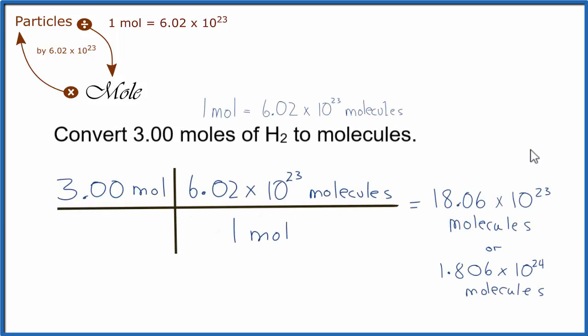Whether you used the mole map or conversion factors, you should have ended up with 18.06 times 10 to the 23rd molecules. You could change this to 1.806 times 10 to the 24th, if you wanted to have correct scientific notation.